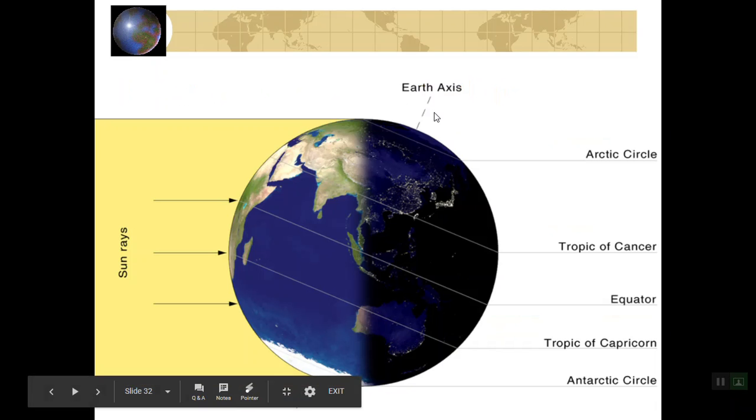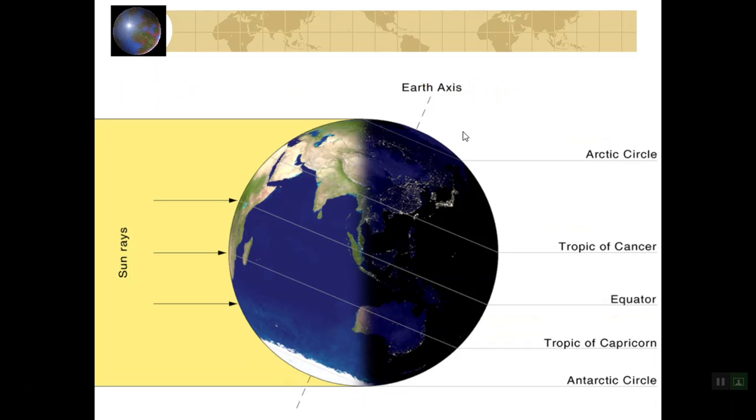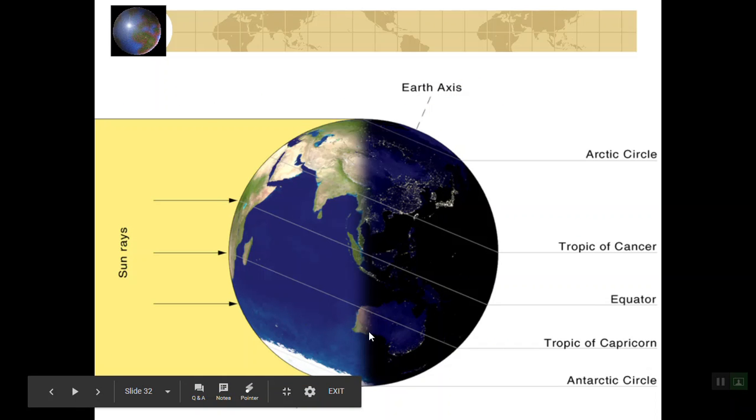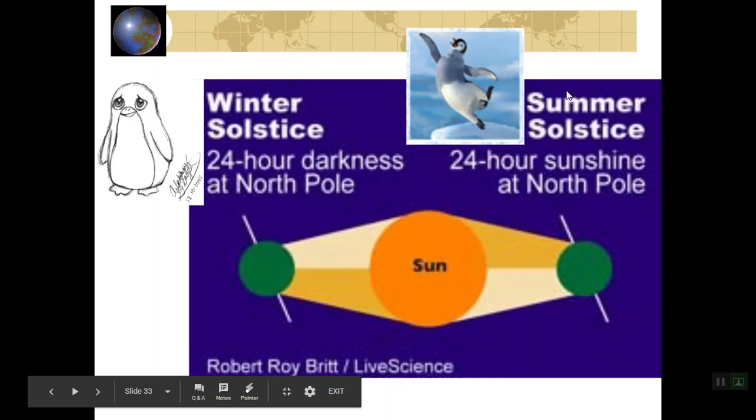We've looked at this a lot. So in this picture here, the North Pole is tilted away from the sun. The North Pole is actually in 24 hours of darkness. And this is the Northern Hemisphere's winter. Seasons are opposite, though. So this is actually summertime for the Southern Hemisphere.